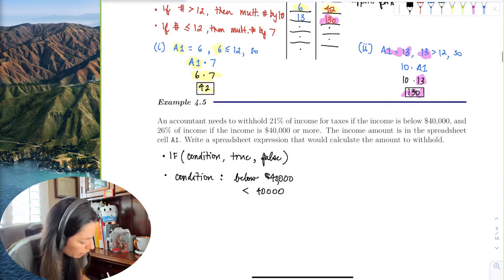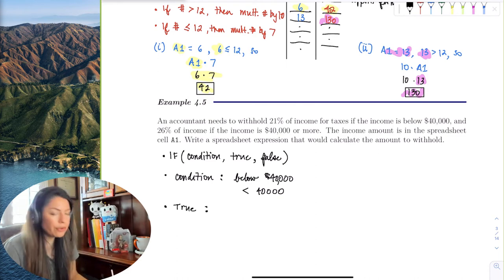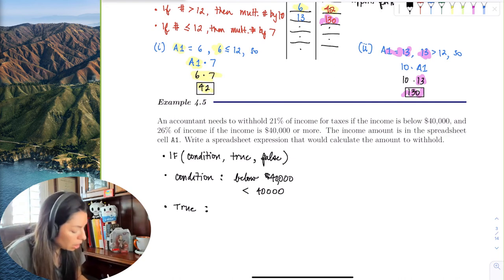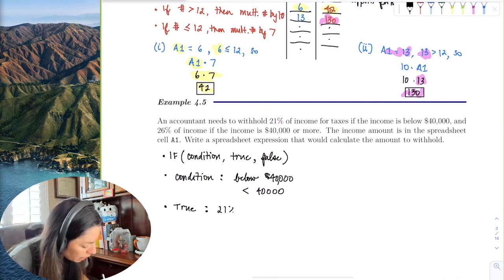Okay, the next part is we have to see what happens if it's true. So if your income is below $40,000, what is the percentage of taxes do they take? Well, they take 21% of the income.